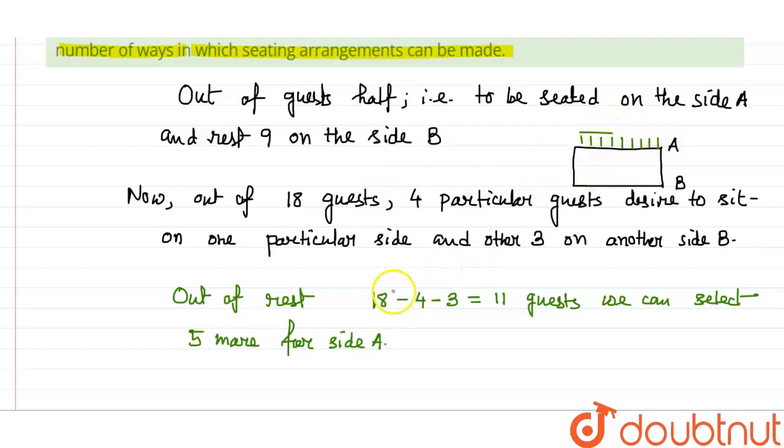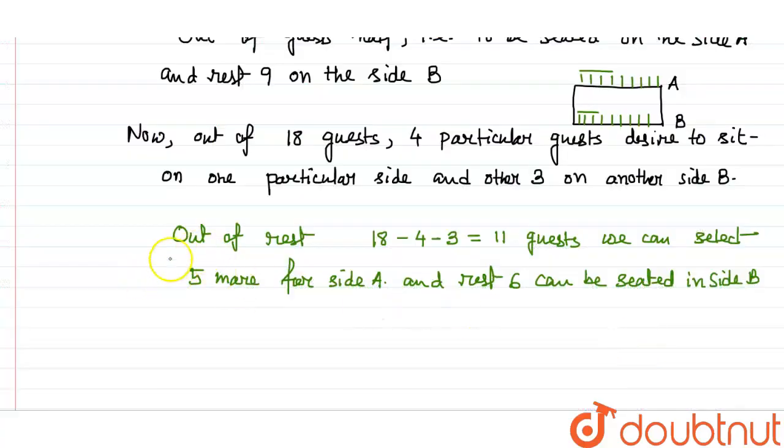And the rest six can be seated in side B, obviously, because side B three are already fixed. So in this way: one, two, three, four, five, six, seven, eight, nine. Three already fixed, so six seats are blank. So you can sit there.